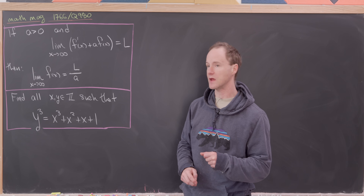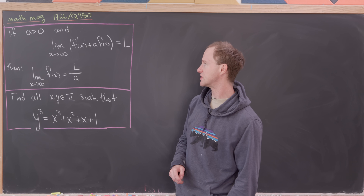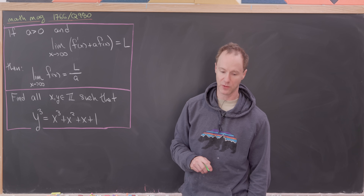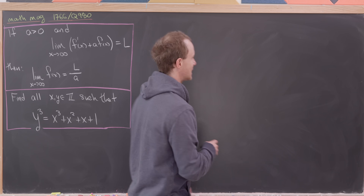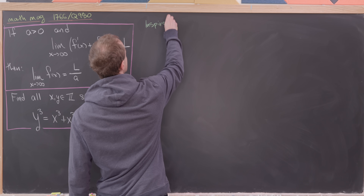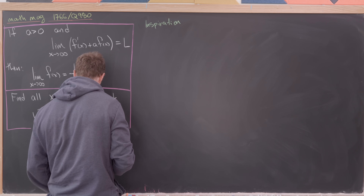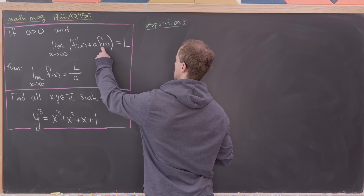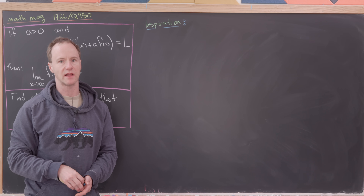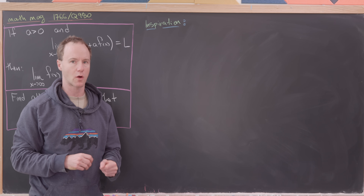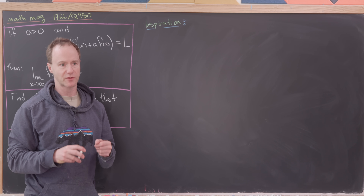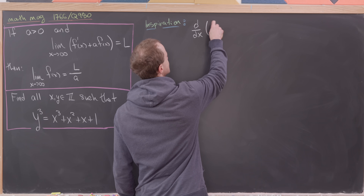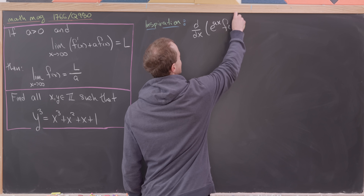Let's look at the inspiration for our solution, built off of this object: f'(x) plus a times f(x). We want to describe this as one piece. It looks almost like the product rule has been applied but not quite. If we multiply by a function we could mold this into something that looks like the product rule — let's multiply by e^(ax) and then take the derivative.